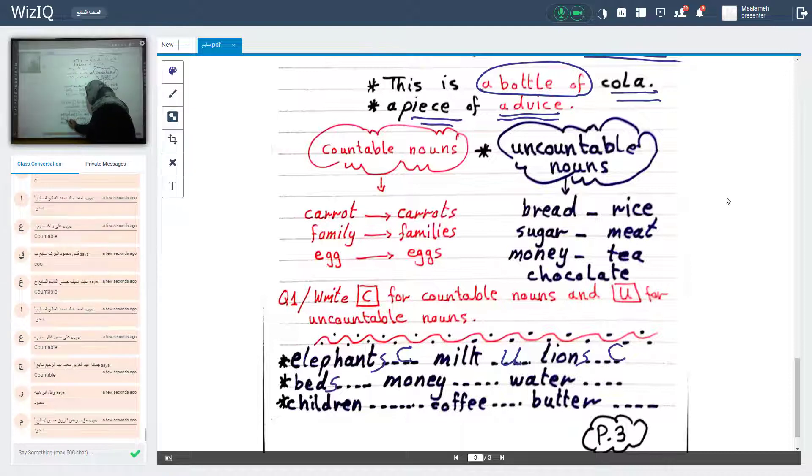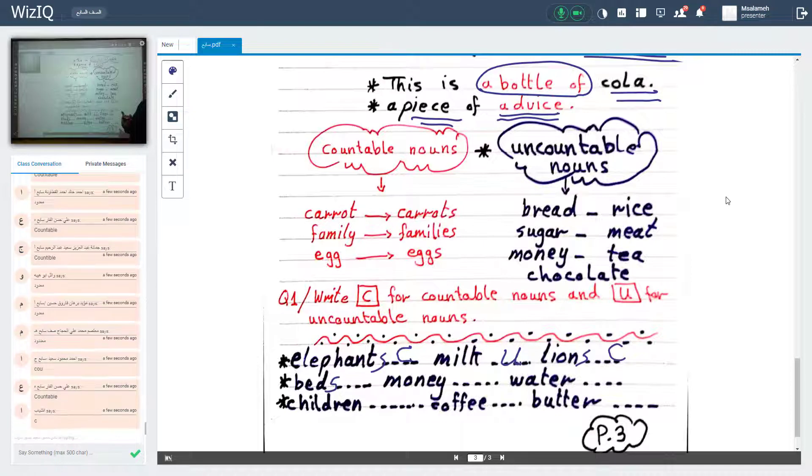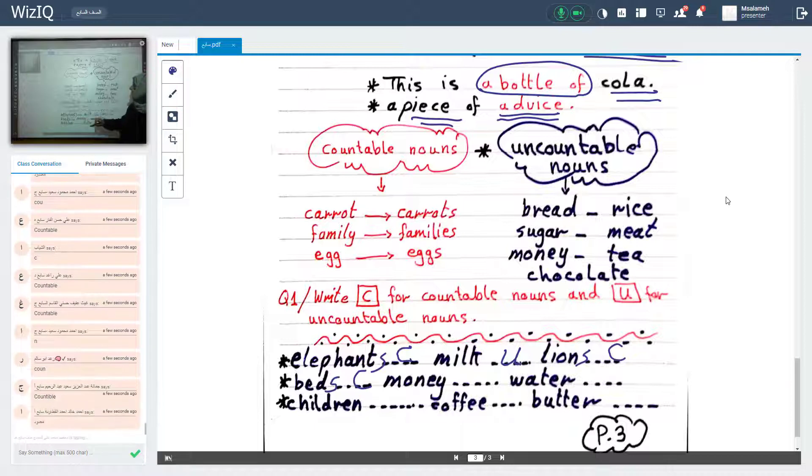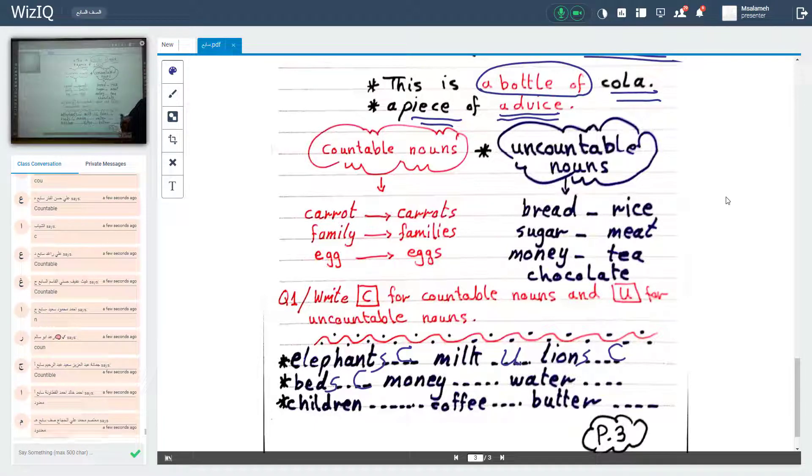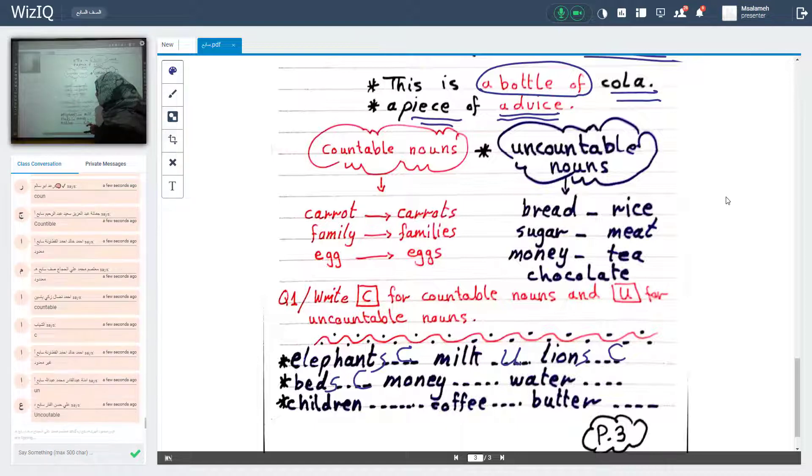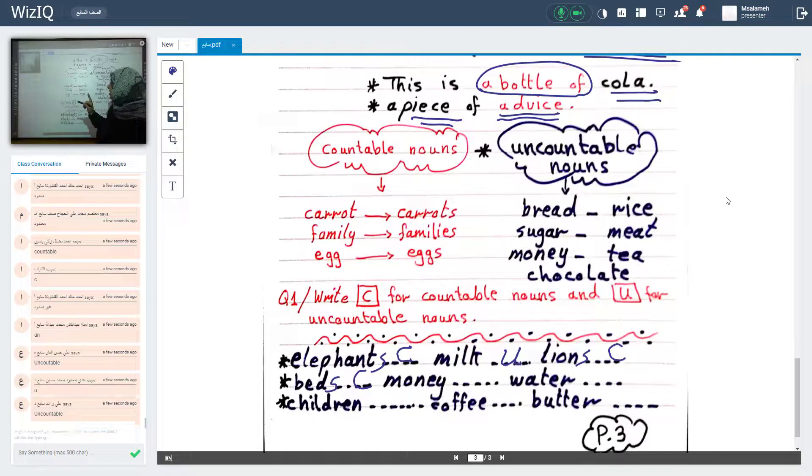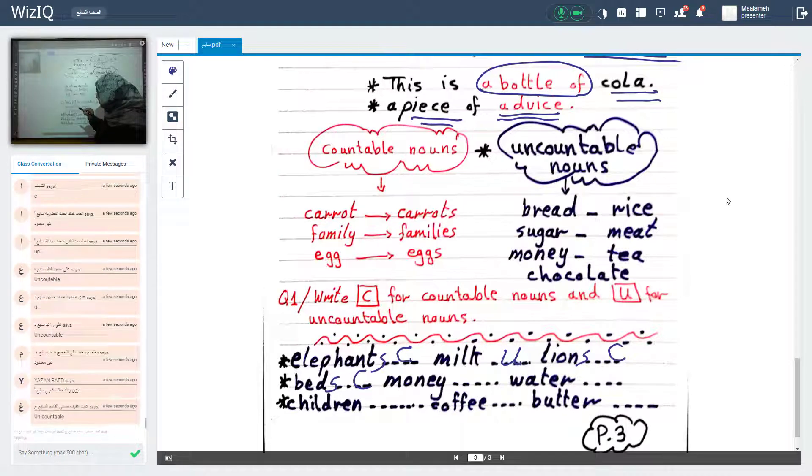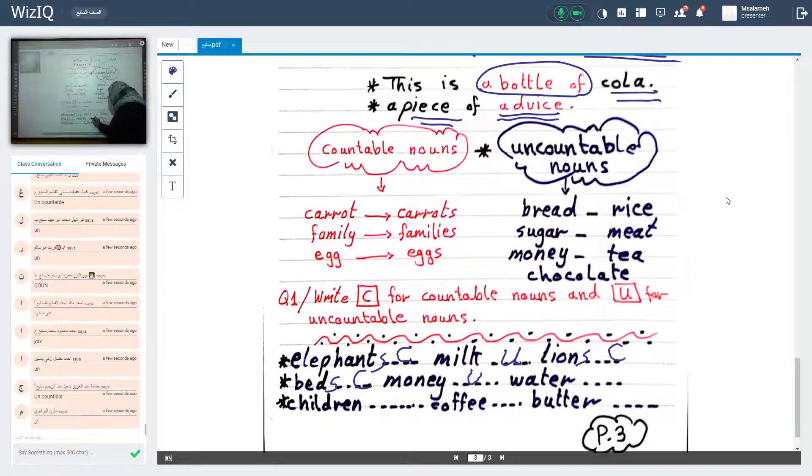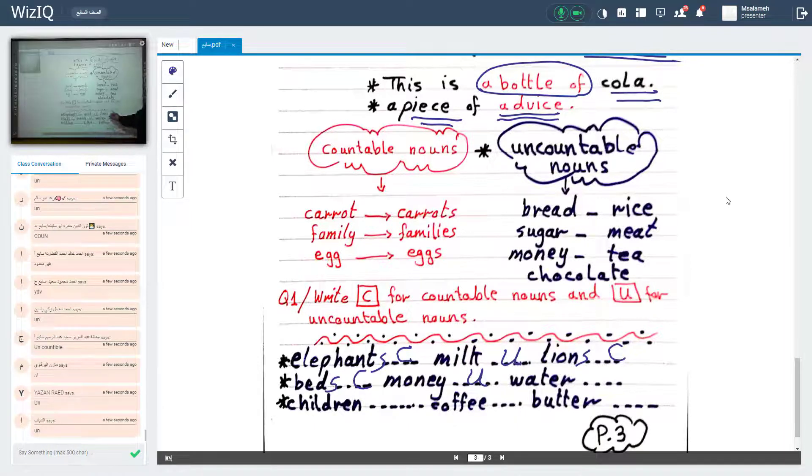Look at beds. What about beds? Countable or uncountable? Beds. Countable. What about money? What about money? Who can tell me? Money countable? It's wrong. Yes. An. Money. Taban. You. An.